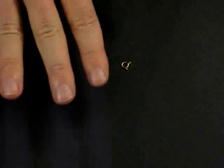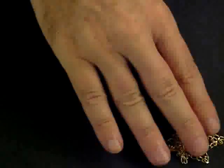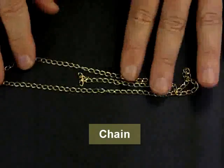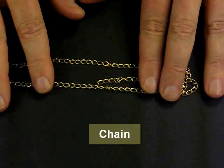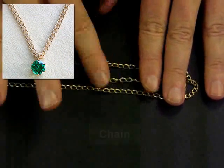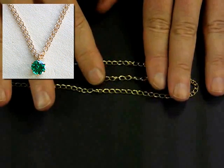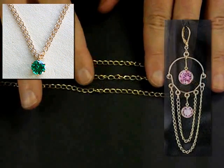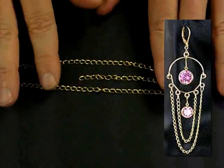And another finding that we'll talk about briefly here is chain. Chain is a finding. We use chain both for making bracelets, for making necklaces, but we also use chain for making some chandelier earring designs. So you can use chain in many different ways.